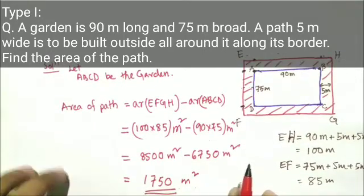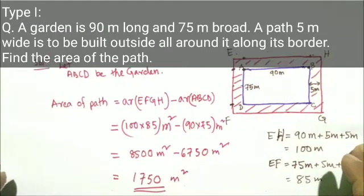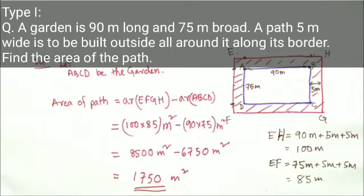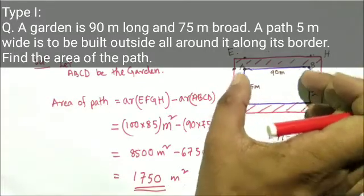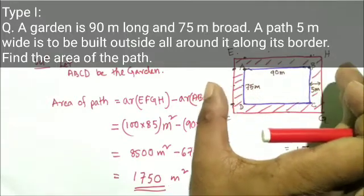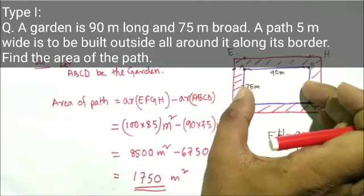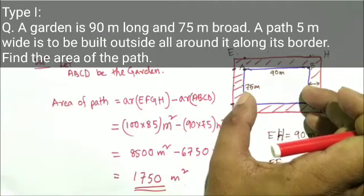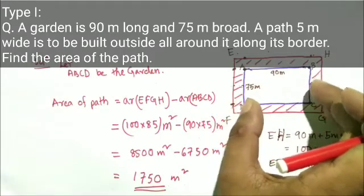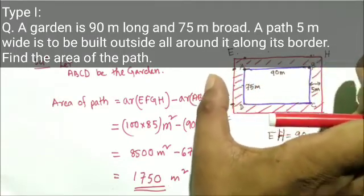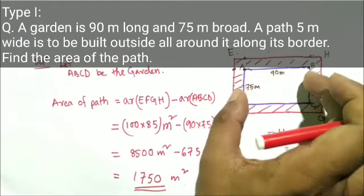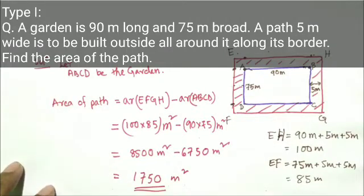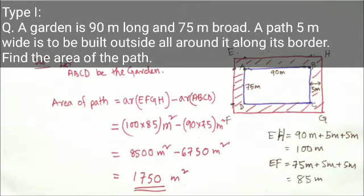The basic approach is: from the whole area, subtract the unnecessary part — the garden — to get the path area. You can take a screenshot of this. Now we will move towards the Type 2 question.